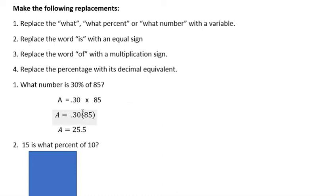Writing that a little bit more algebraically, I'm going to just write A equals 0.30 in parentheses 85. All you have to do there is multiply those two numbers together to get 25.5, which means 25.5 is 30% of 85.